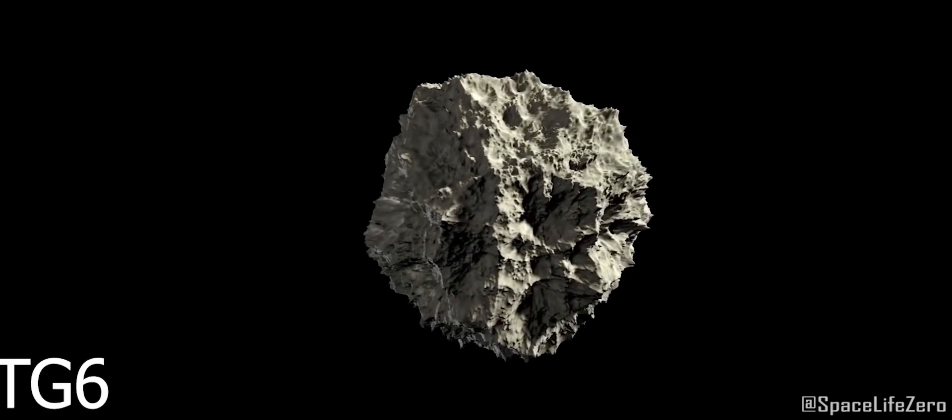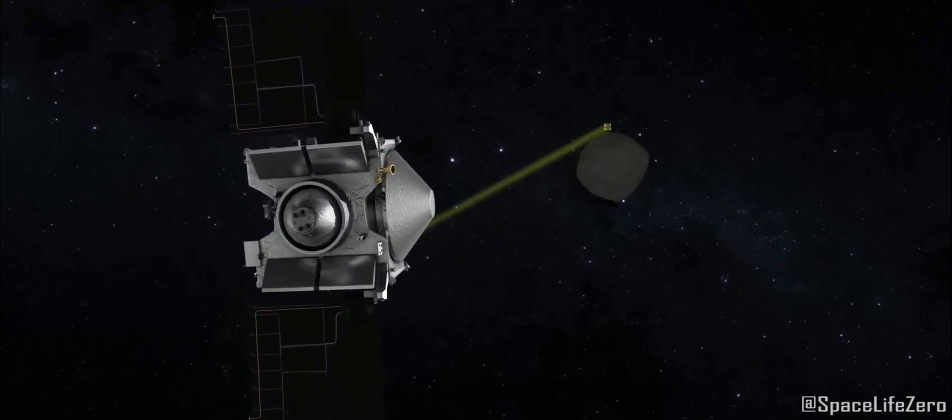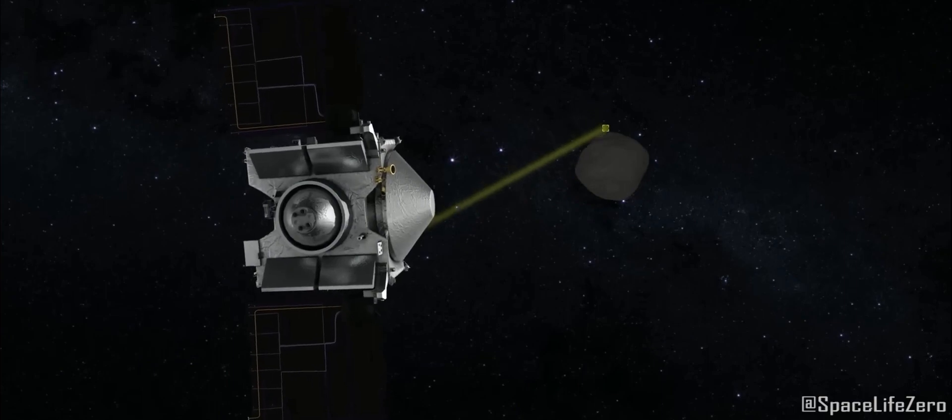The last one is known by the name 2013TG-6. It belongs to the Aiden group and has an estimated size in the range from 13 to 28 meters, cruising at a staggering 4 kilometers per second.